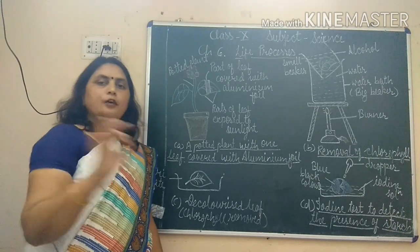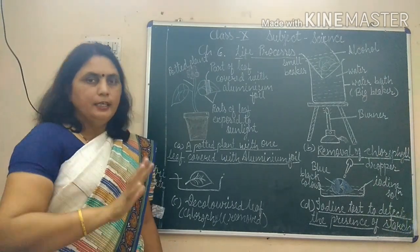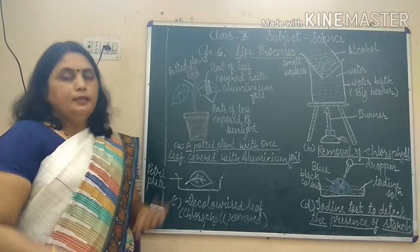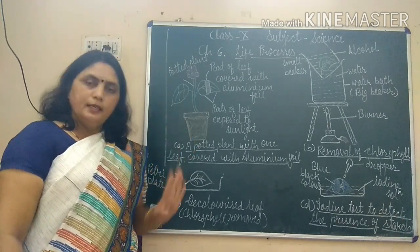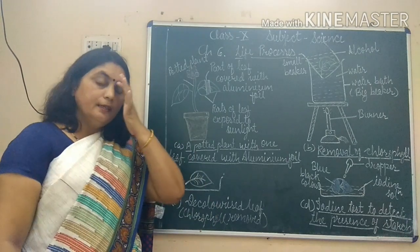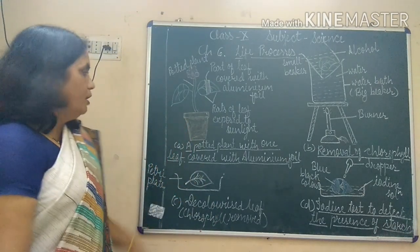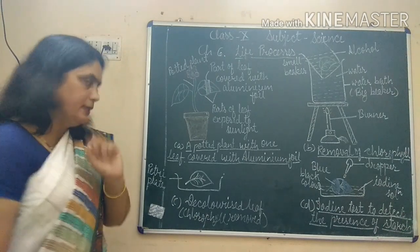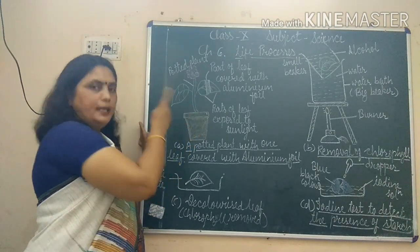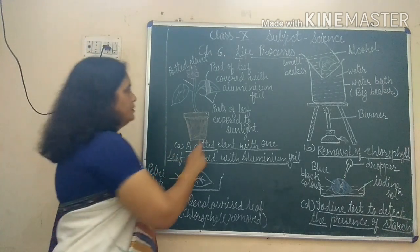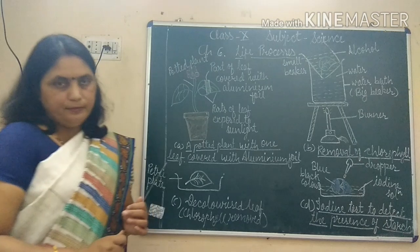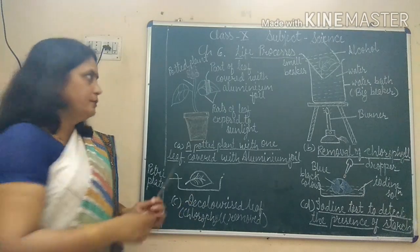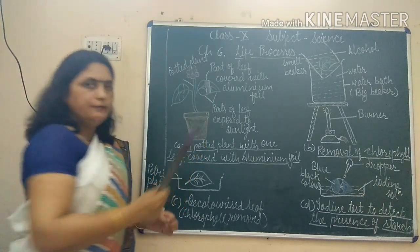All parts of this plant are now without starch. We keep the plant away from sunlight but water it regularly so the plant does not die. After three to four days, before putting the plant into sunshine, we choose one leaf and cover a small central part of that leaf with aluminum foil.